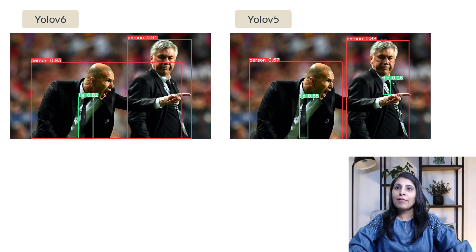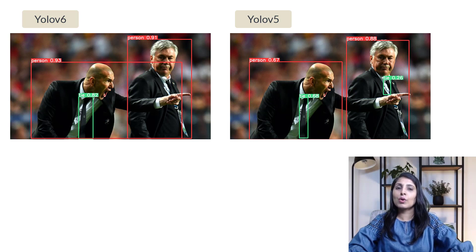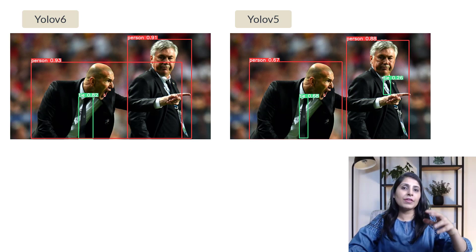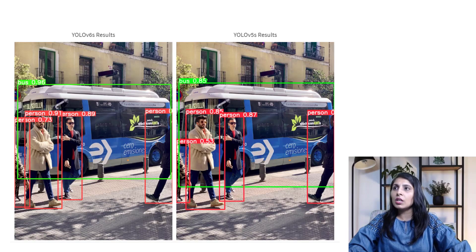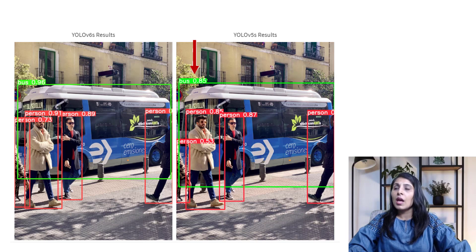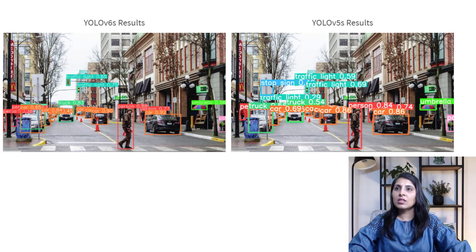One thing to note is that YOLOv5 is recognizing a tie worn by the second person, but YOLOv6 is not detecting that. Looking at the second image, you can see YOLOv6 is 96% sure that this is a bus, while YOLOv5 is 85% sure. For the other labels too, you can see that the confidence values from YOLOv6 are higher compared to YOLOv5.